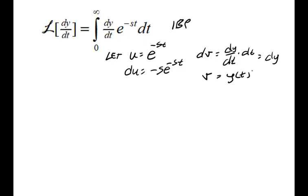So when we do our substitution, we're going to get u times v, or it'd be y of t, e to the negative st. And we need to evaluate that, I'll evaluate in a second. Then we're going to subtract the integral of v du. So negative s is just a constant. So we'll change this to adding s, and then the integral from 0 to infinity of y of t, e to the negative st dt.